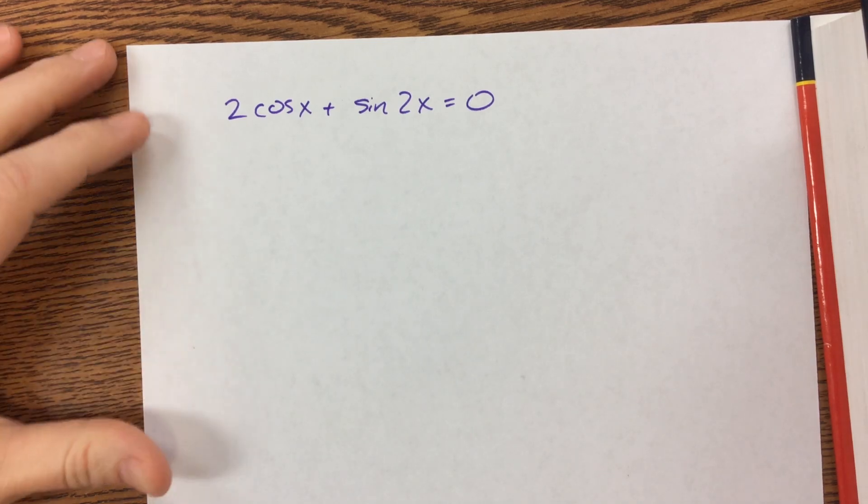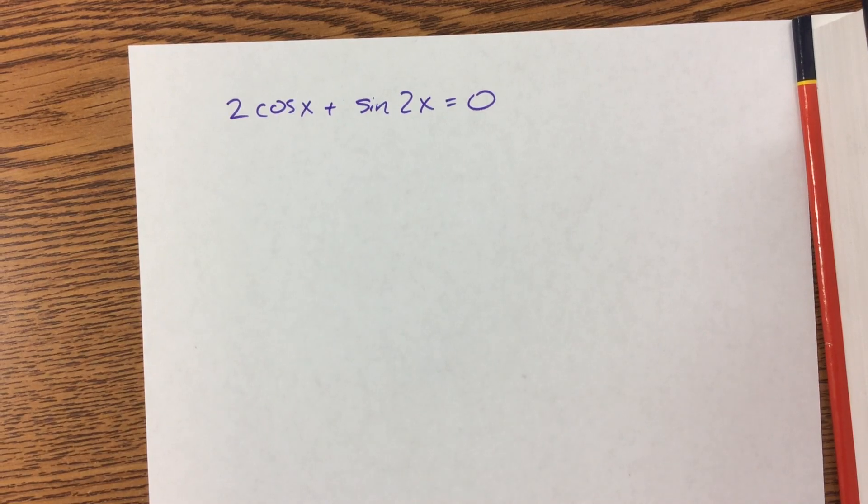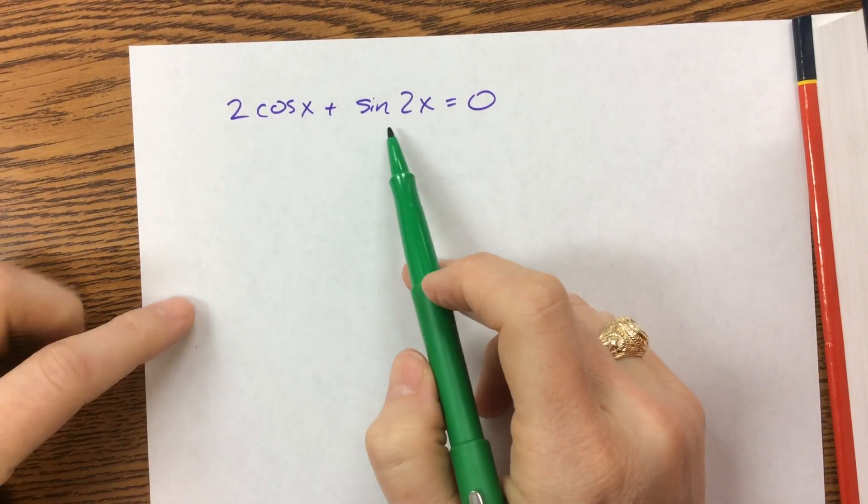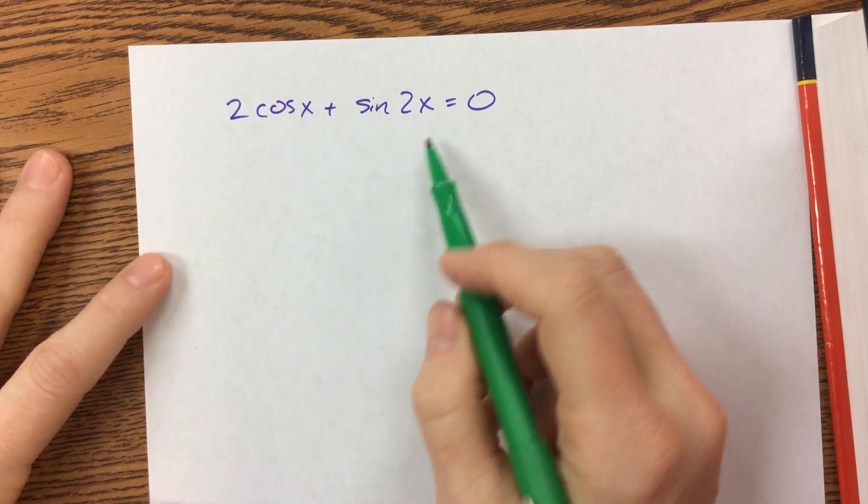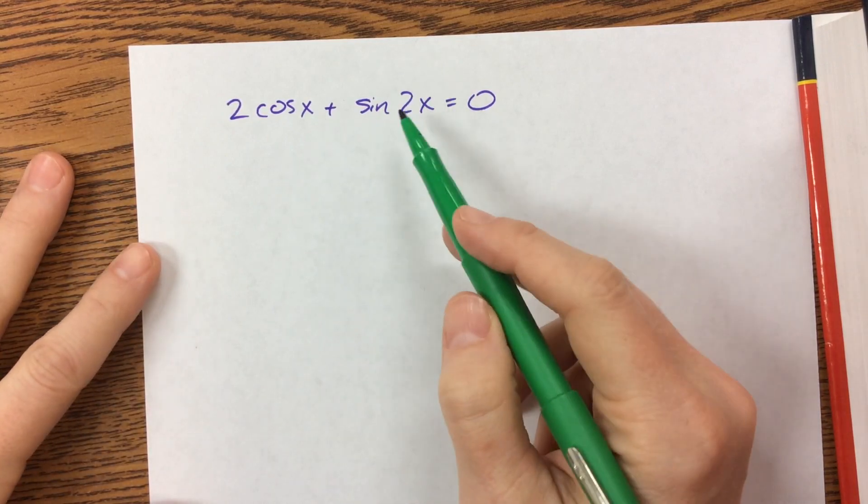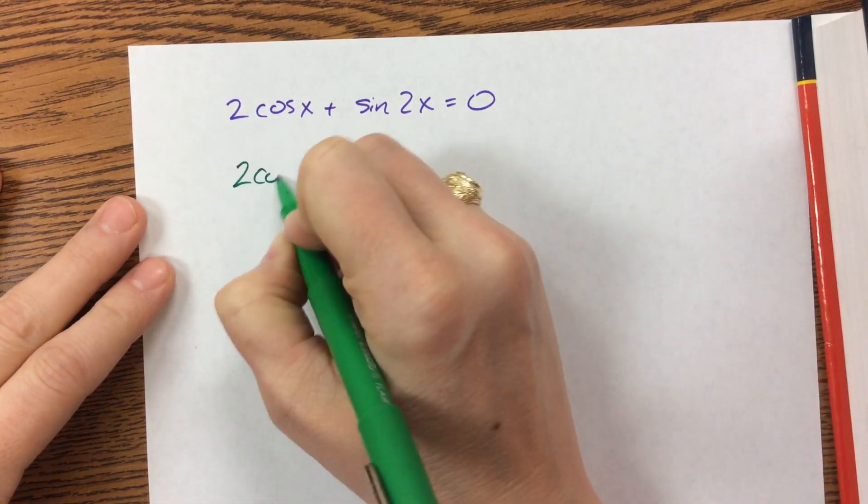And another solving tricky equations. On this one, we notice that we've got sine of 2x and cosine of x. So I'm going to have to use my double angle identity, and I'm going to get this.